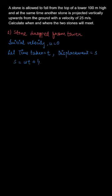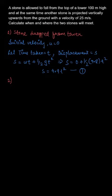So, you can write s equals ut plus half gt squared. Substituting the value of g as 9.8 and initial velocity u as zero, we get s equals 9.8 by 2 times t squared, that is 4.9t squared. Let us assume that to be equation number one.